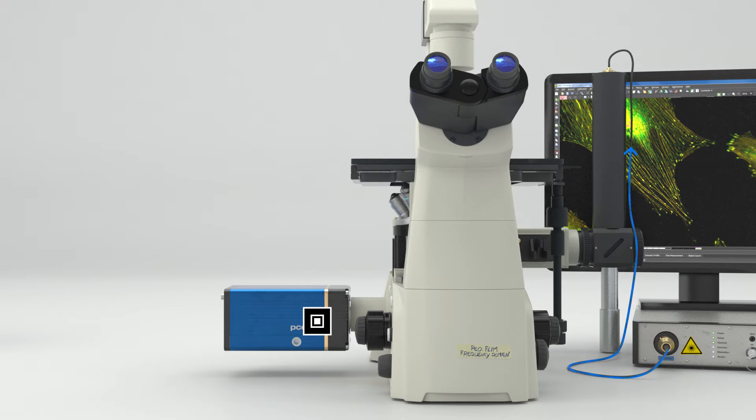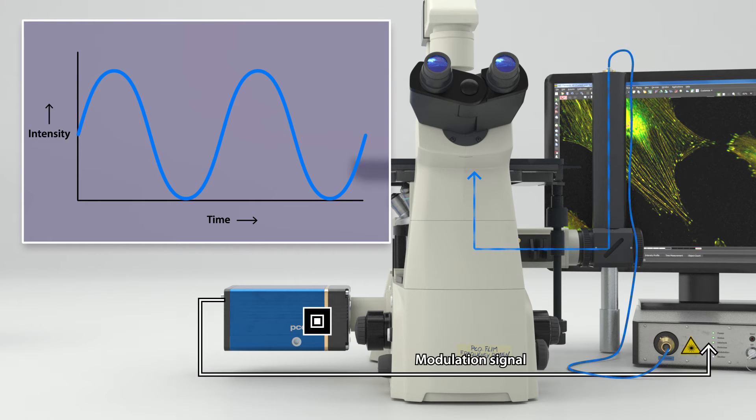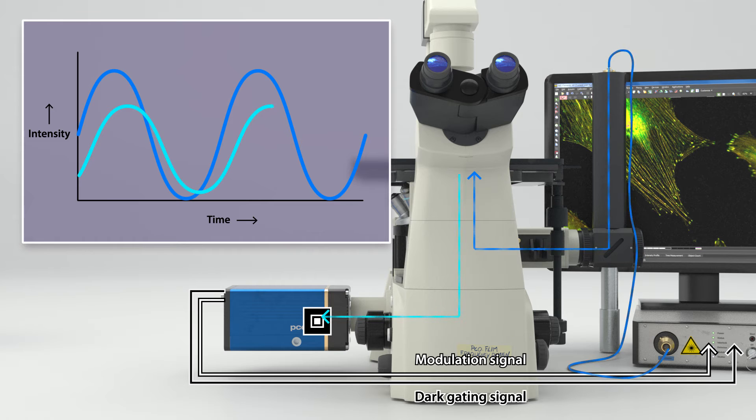In this frequency domain approach, the intensity of the excitation light is continuously modulated using sine or square waves. The modulation source is the camera, which provides modulation frequencies ranging from 5 kHz up to 40 MHz as well as the signal for dark gating. Using a sinusoidal excitation waveform, the emission waveform is also a sinusoid with the same frequency. It is delayed in time and shows a decreased amplitude, a decreased constant component and a decreased modulation depth.